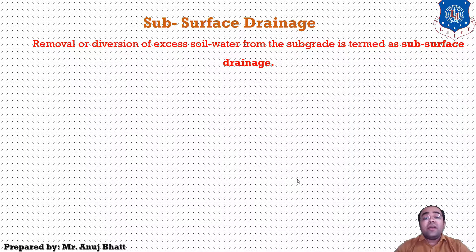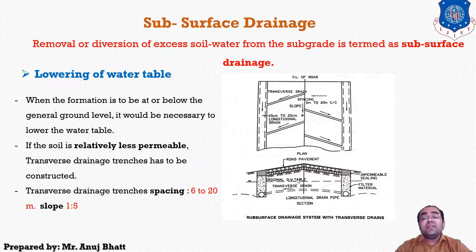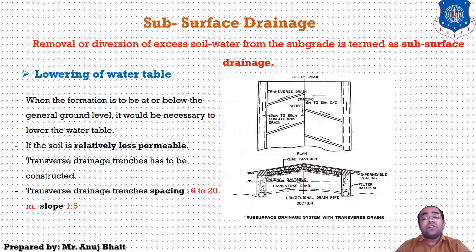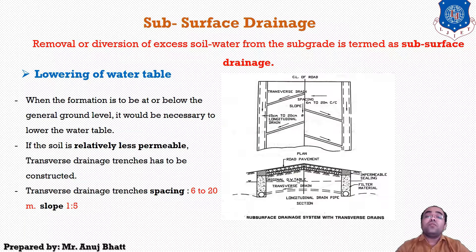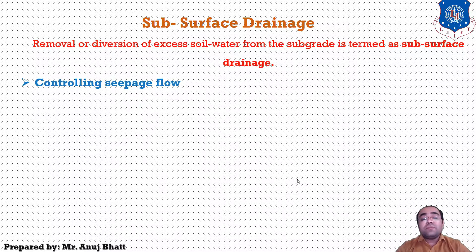The depth of the trench depends on the required lowering of the water table, the distance between drainage trenches, and the type of soil. If the soil is relatively less permeable, lowering of the groundwater table may not be adequate at the center of the pavement. In addition, transverse drains may have to be provided to effectively drain off the water and lower the water table. These transverse drains should be at a spacing of 6 to 20 meters and at a slope of 1 in 5 from the center to the edge of the road.